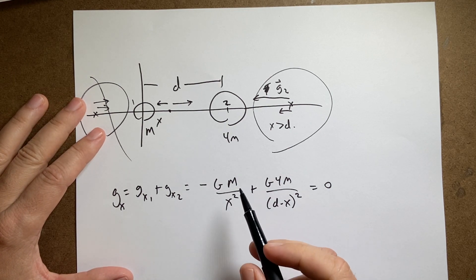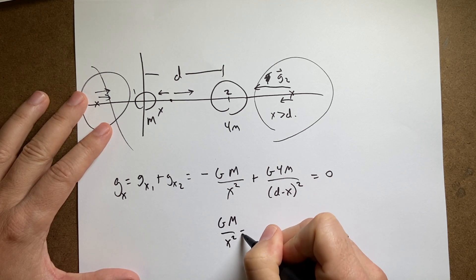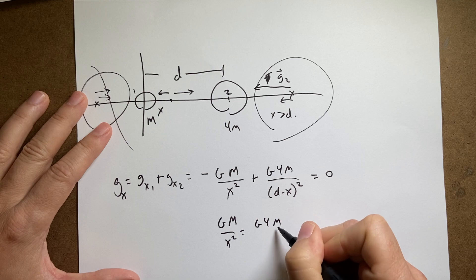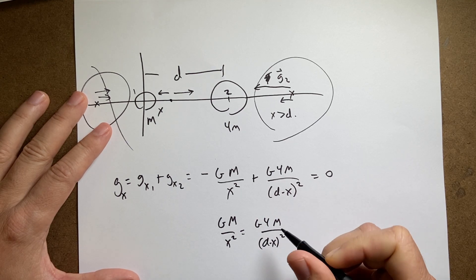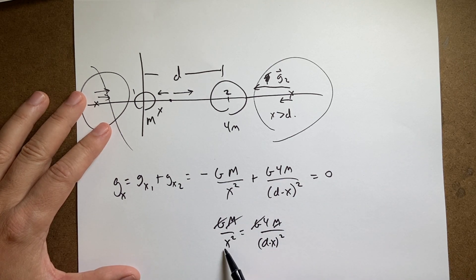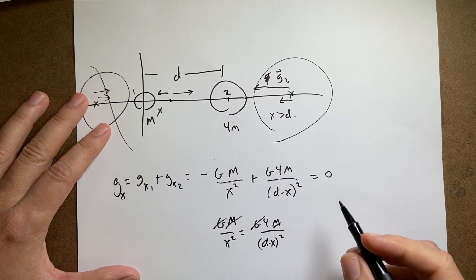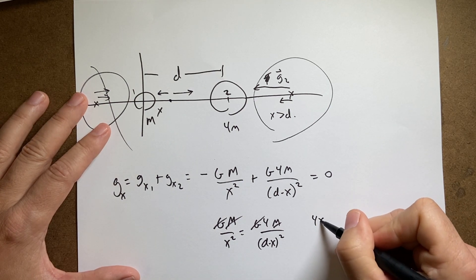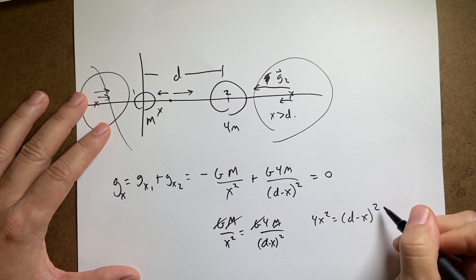Okay, so first of all, I'm going to add this term to both sides and I get gm over x squared equals g4m over d minus x squared. The g and the m's cancel. Now I can multiply both sides by x squared. Multiply both sides by d minus x squared. And I get 4x squared equals d minus x squared.